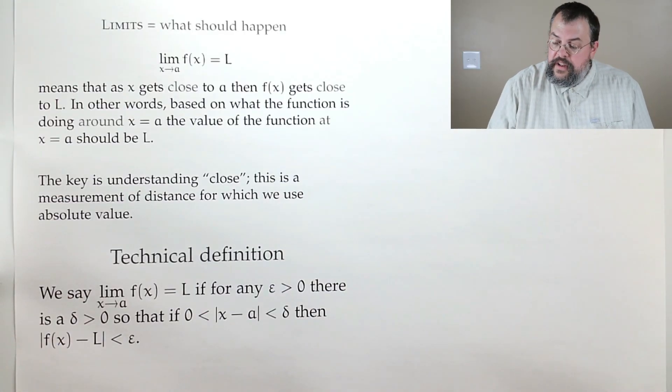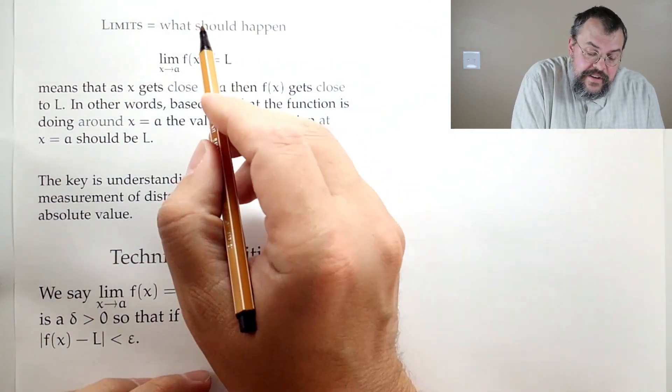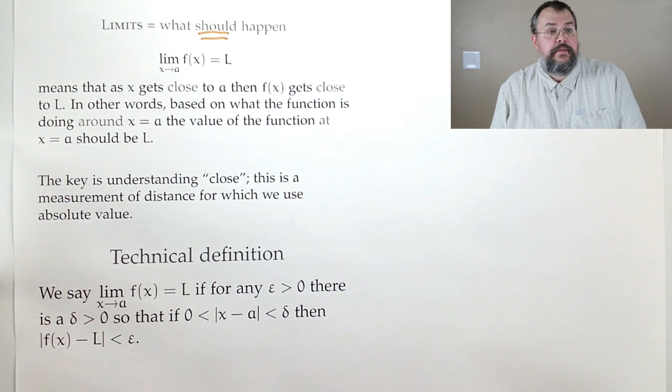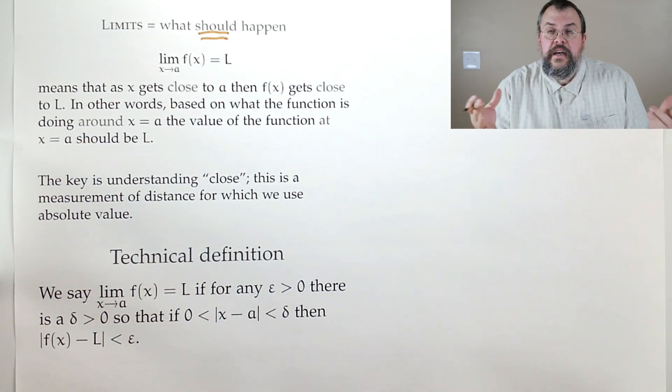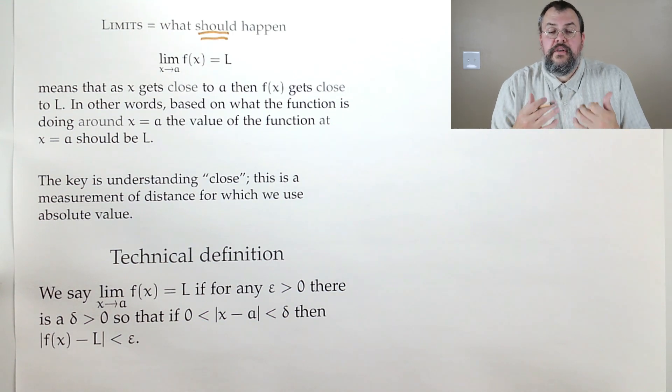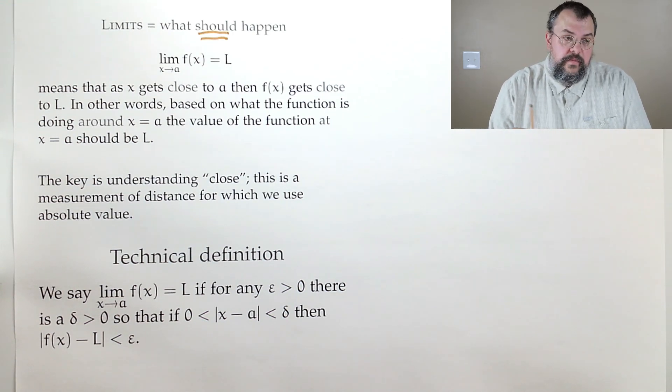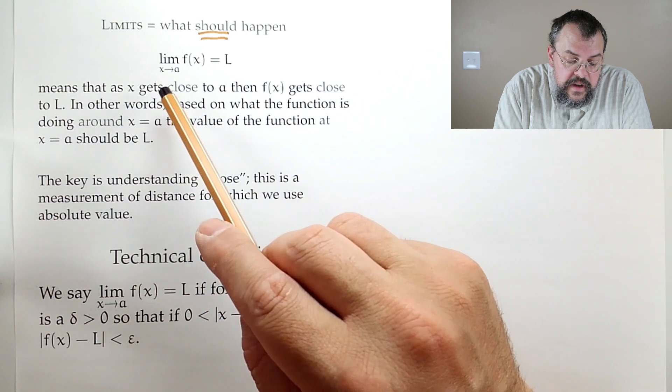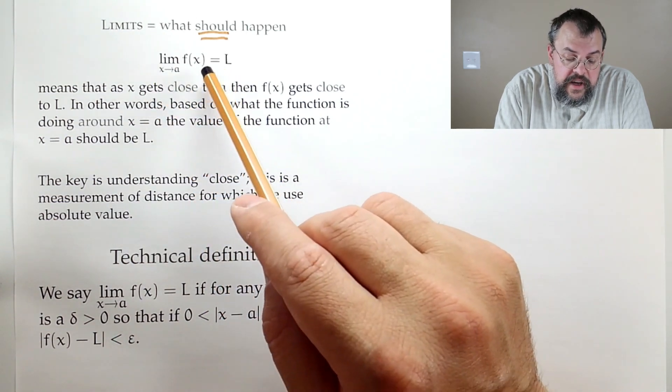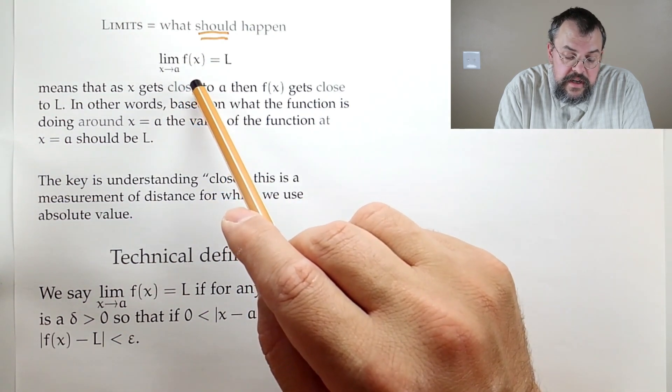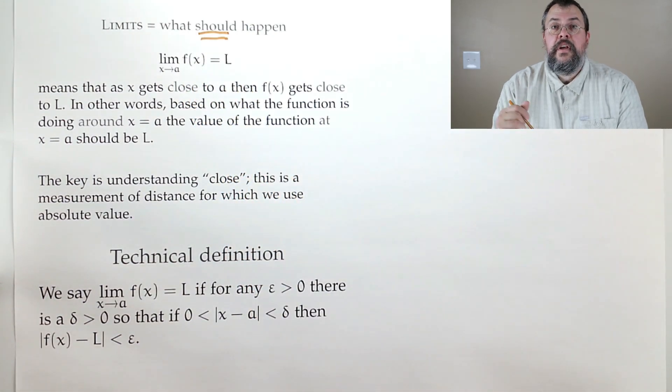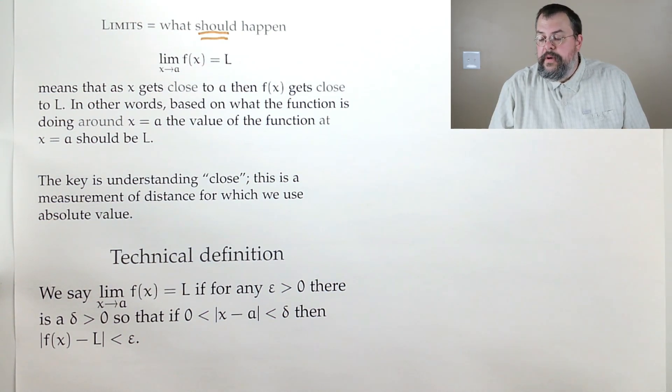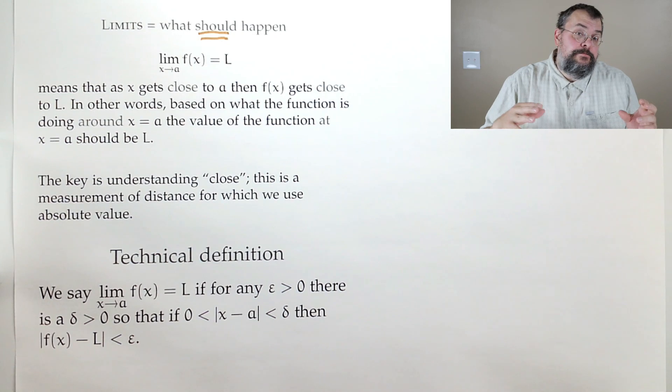And that's the idea of limits. All right, so let's get into some of the philosophy, the spirit of limits, and then get into technical details. So the first thing to remember is that limits are what should happen. So in other words, limits don't tell you what does happen. They say, hey, let's look at your behavior nearby. And based on your behavior nearby, draw some conclusions about what we should expect to occur. And the way we say this is the limit as x goes to a of f(x) equals L. In other words, x goes to a, so x is getting close to a, then f(x), which is the object we're examining, is getting close to L. And therefore, what we really should interpret is this as the function at a, it should be L.